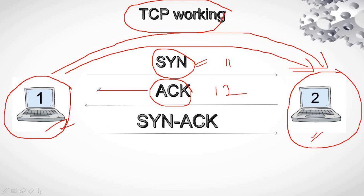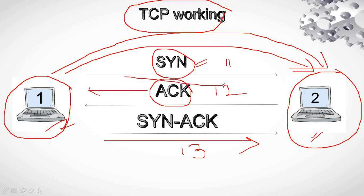And once this Acknowledgement Packet is received by your PC, your PC will send back a Synchronization Acknowledgement Packet and it will again increment this number by 1, making it 13. This is similar to chatting — like you first send 'Hi', the friend says 'Hello', and you say 'Hey, how are you?' So: your PC sends a SYN, the other PC sends back an ACK incrementing the number by 1, and your PC sends a SYN-ACK back, thereby establishing the connection.